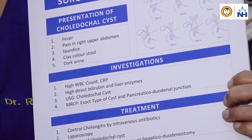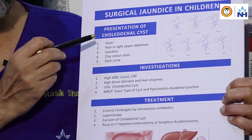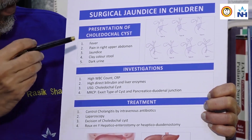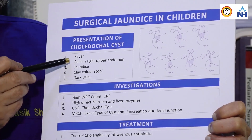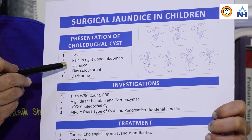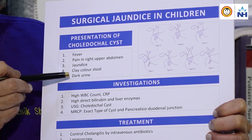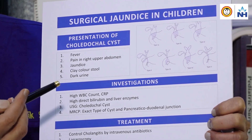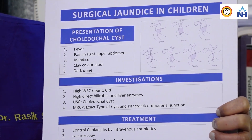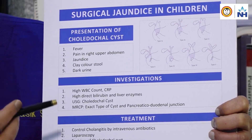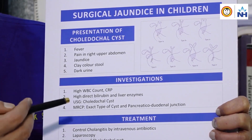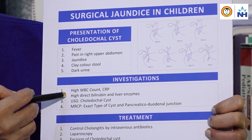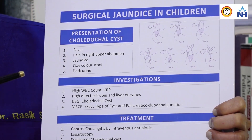The presentation is similar to biliary atresia. They can present with infection in the bile duct and liver — what we call cholangitis — with fever, chills and rigors, pain in the upper abdomen, jaundice, clay-colored stool, and dark urine. We suspect choledochal cyst and confirm it by sonography and MRCP. Blood tests for infection include WBC count, blood culture, and CRP levels, along with a direct bilirubin level which will be elevated.